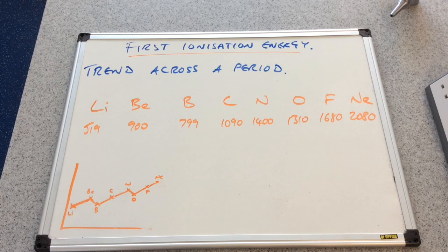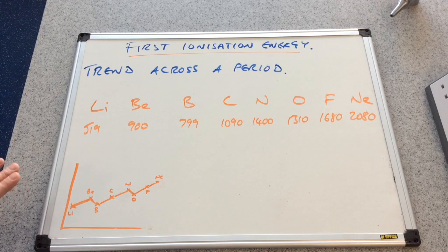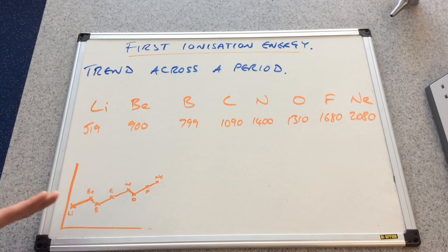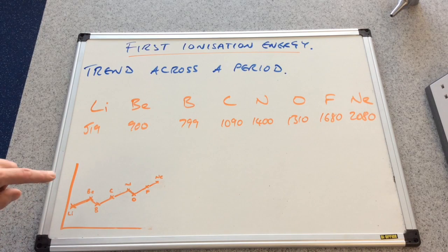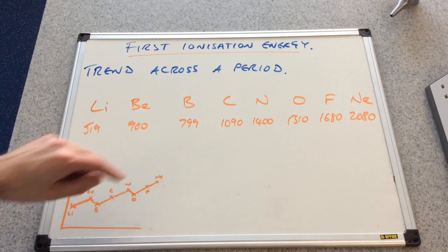It's a little bit more complicated, but hopefully by the end of the video you'll be fine with this. The first thing to note is the general trend is that the first ionisation energy increases going from left to right.